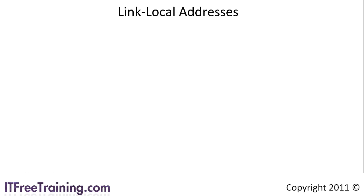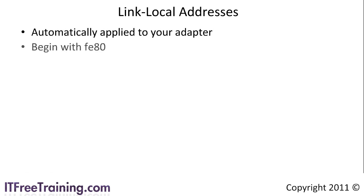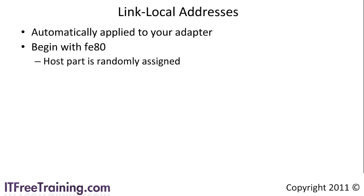The next address is the link local address. Link local addresses are automatically configured and applied to your adapter. They always begin with FE80 and the host part, the last 64 bits, is randomly assigned. In some literature you may see that the MAC address of the network card is supposed to be part of the interface ID. This is true, but you will find that a lot of operating systems like Windows will use a randomly assigned value rather than use the MAC address. The reason the MAC address may not be used is that it raises privacy concerns — if the MAC address is part of the IP address, it could be used to identify the computer. So even though a lot of literature states the interface ID should be generated from the MAC address, in the real world it is often randomly generated.